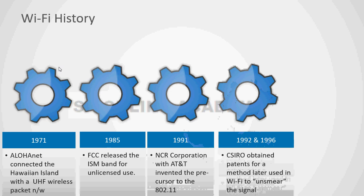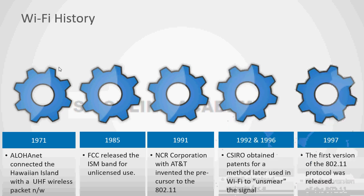In 1992 and 1996, CSIRO — the Commonwealth Scientific and Industrial Research Organization of the Australian government — obtained patents for a method later used in Wi-Fi. That is why Australians are attributed as the fathers of Wi-Fi. Then in 1997, the very first version of the 802.11 protocol was released, after which many more protocols followed, which we will discuss in the coming slides.